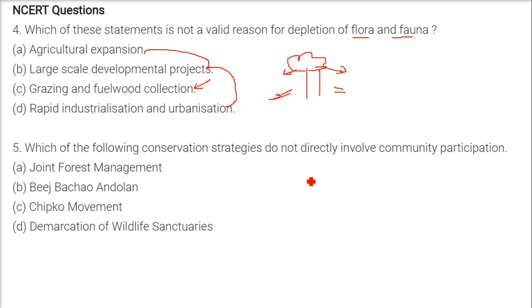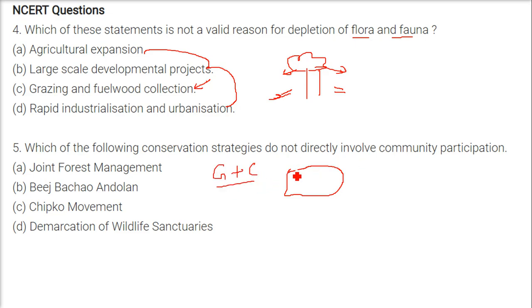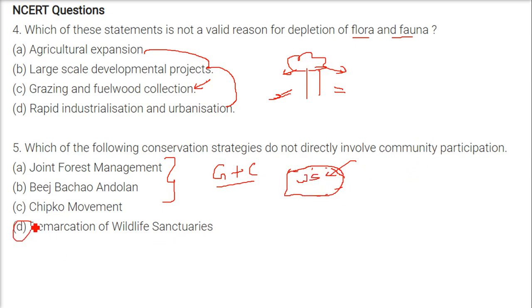When we combine government policies with the community, things work well — that is joint forest management, Beej Bachao Andolan, Chipko Andolan. But when you talk about strategies that do not directly involve community participation, the demarcation of a wildlife sanctuary area does not involve community participation. So the answer is D.